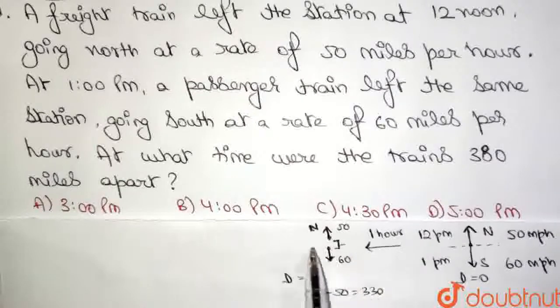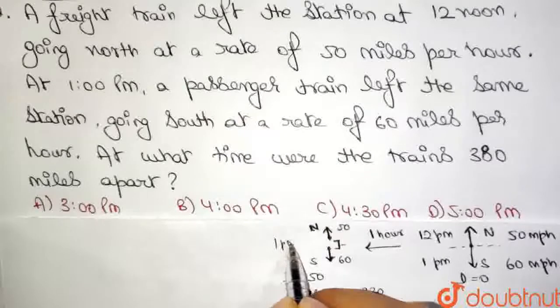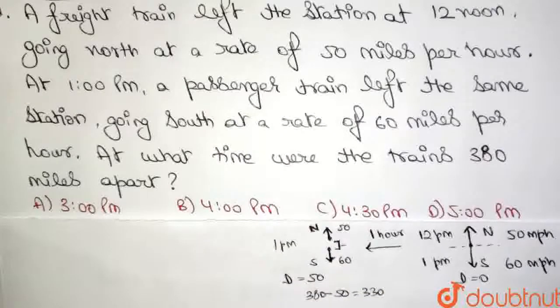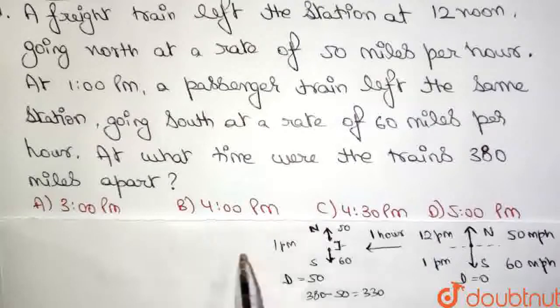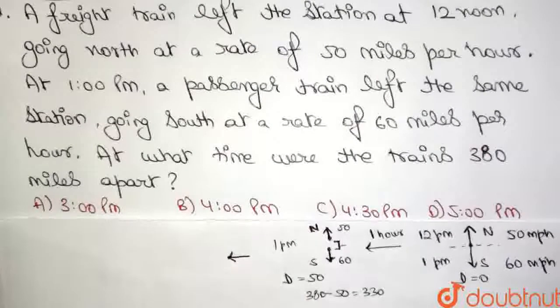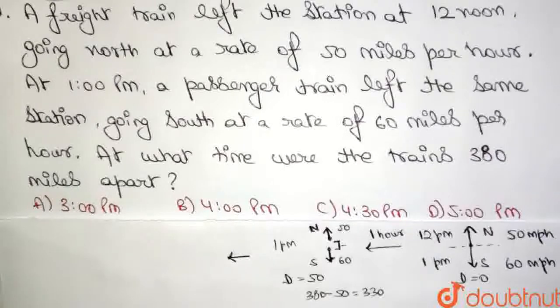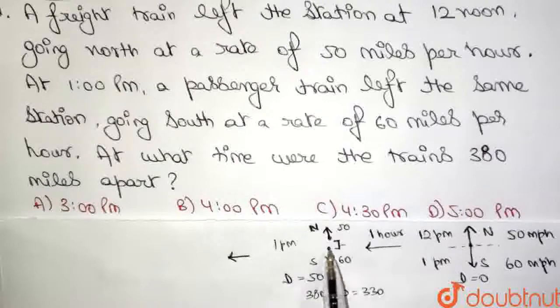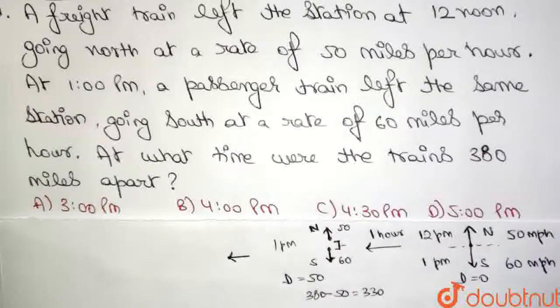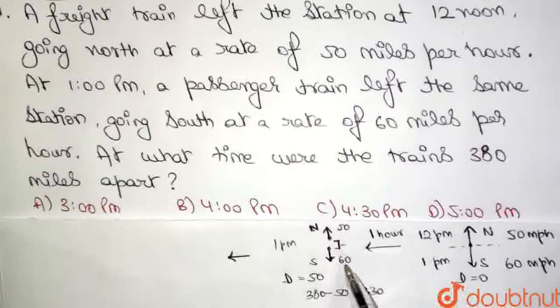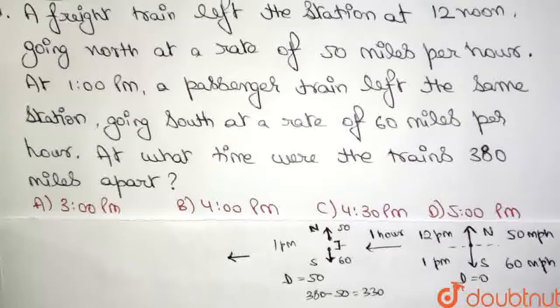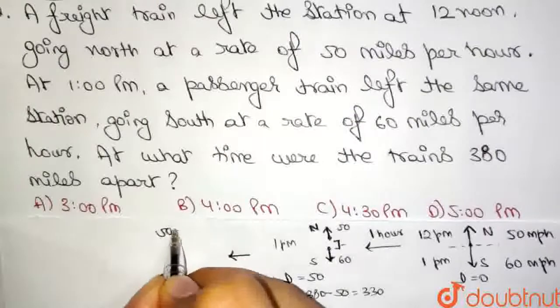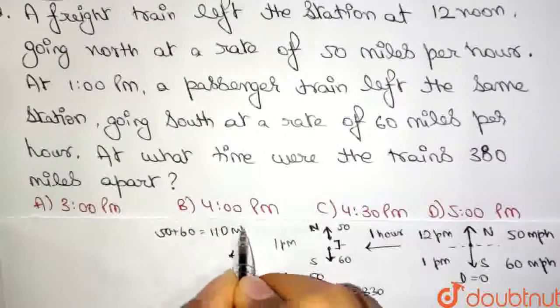Now, that means at 1 pm, it is 1 pm because 1 hour has passed. At this point of time, both of the trains will actually start to move now. So, as both of the trains start to move, that means now they will be going against each other at a velocity of 50 miles per hour towards north and the train at 60 miles per hour towards south. They are going away from each other. So, what is the relative velocity of them going away from each other? Nothing but this plus this because they are going away from each other. So, we can simply add both of these velocities. 50 plus 60 which is equal to 110 mph.